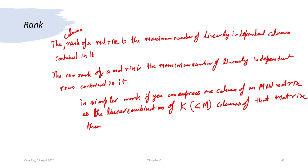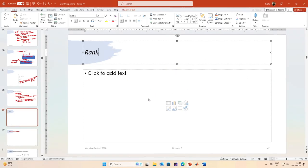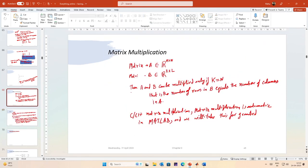If the column rank of a matrix is K and K is less than the full dimension, it is called rank deficient. This is how we define the rank of a matrix. There is one more result on ranks that we want to cover before we talk about matrix multiplication.